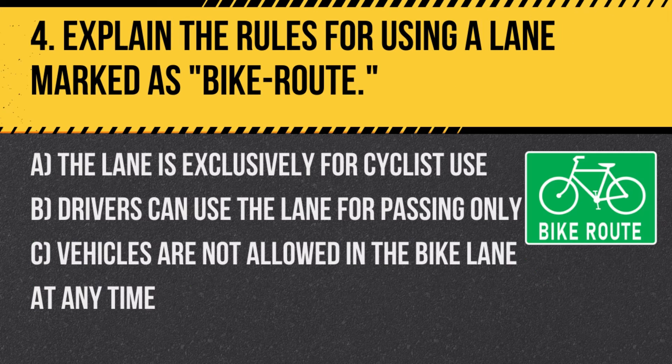Question 4: Explain the rules for using a lane marked as bike route. A. The lane is exclusively for cyclist use. B. Drivers can use the lane for passing only. C. Vehicles are not allowed in the bike lane at any time. Answer: A. The lane is exclusively for cyclist use. A bike route lane is designated only for bicycles to enhance safety for cyclists.